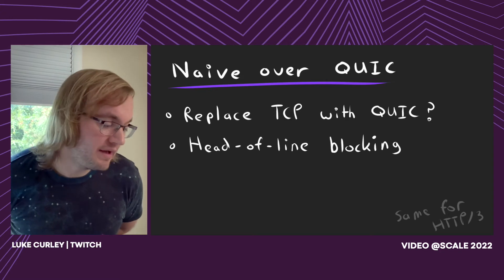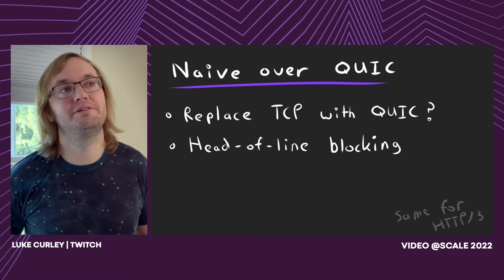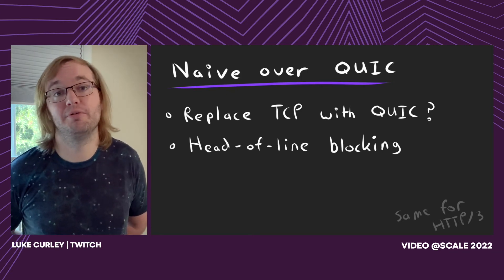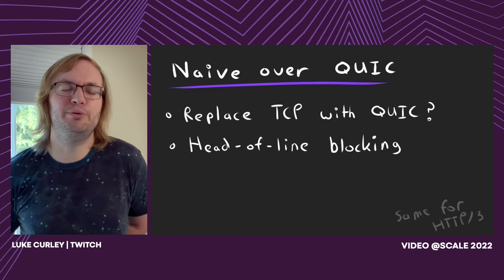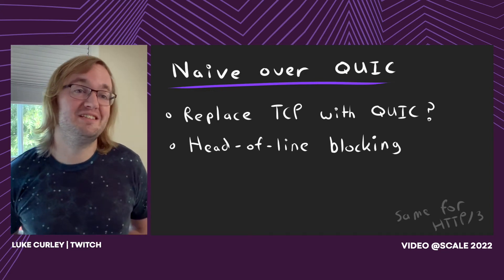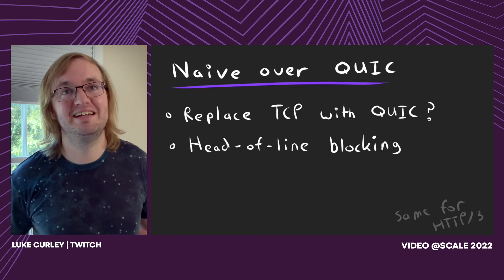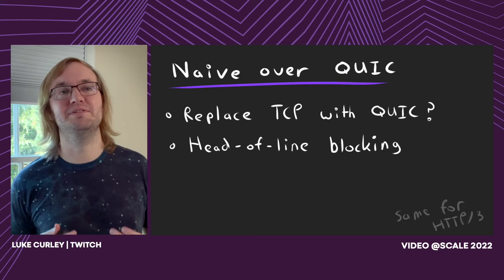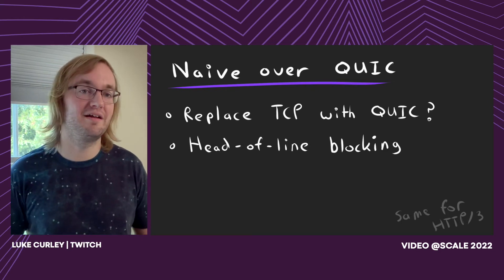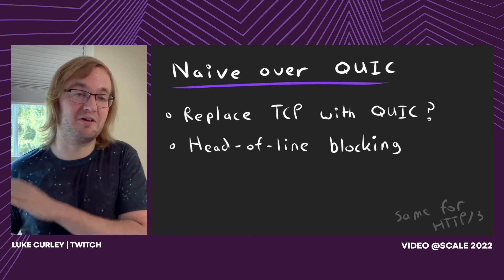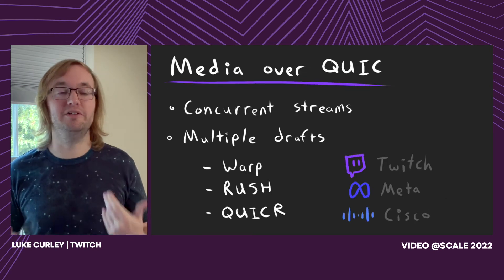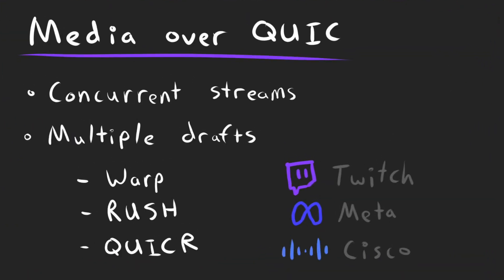The question is how do you actually use QUIC? If I wanted to take RTMP or HLS and just make them better and fix these fundamental issues, could we just replace TCP? The answer is no, because if you're just using one QUIC stream you're slightly better than TCP, but you're not using that concurrency for any positive impact - you're still head-of-line blocking. So we can't just upgrade to HTTP/3 and call it a day. We need to do something new.